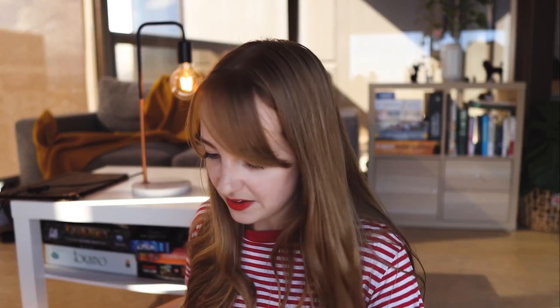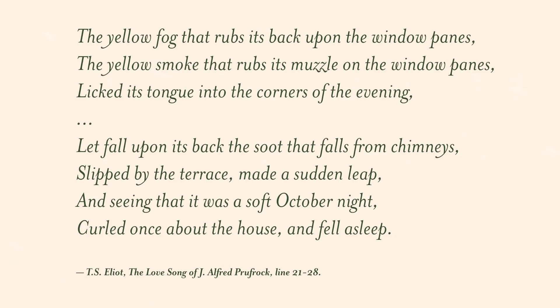Allusion is the next one I want to talk about — not magical illusions, but when we allude to something without explicitly stating it. Going back to The Love Song of J. Alfred Prufrock: 'The yellow fog that rubs its back upon the window panes, the yellow smoke that rubs its muzzle on the window panes, licked its tongue into the corners of the evening, fell upon its back, the soot that falls from chimneys, slipped by the terrace, made a sudden leap. And seeing that it was a soft October night, curled once about the house and fell asleep.' This little passage is alluding to a cat — it's pretty obvious — but it never explicitly states that it's a cat. That is allusion.